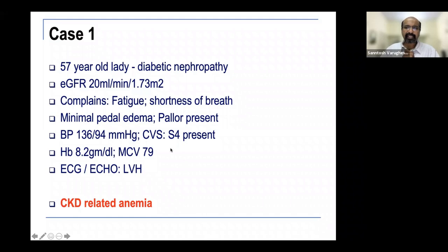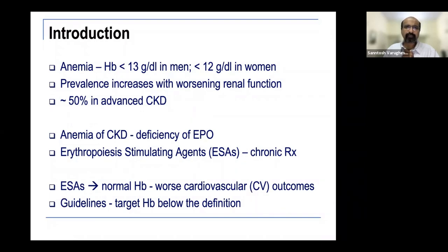The default diagnosis is CKD-related anemia. WHO definitions remain 13 g/dL for men and 12 g/dL for women. Anemia prevalence increases with CKD stage — in advanced CKD (stages four and five) it is about 50%, and at least one estimate says one third of patients may have anemia. It is usually a deficiency of erythropoietin, and chronic therapy with erythropoietin-stimulating agents is the norm.